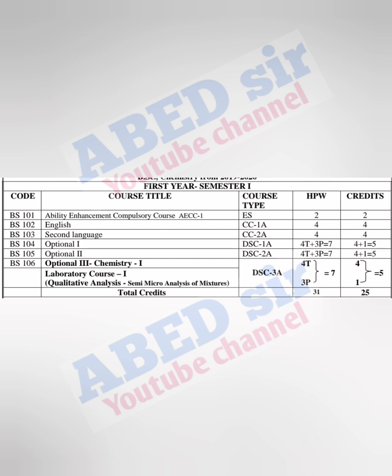Next, second language. You can select any second language like Telugu, Urdu, Hindi, Sanskrit, Arabic and other languages as a second language. 4 classes per week for this second language and 4 credits. Once you qualify this second language subject you will get these credits. Semester exam duration is 3 hours. Maximum marks for this subject is 100, out of 100, 80 for semester exam and 20 for internal exam.